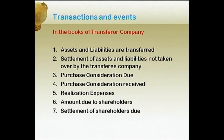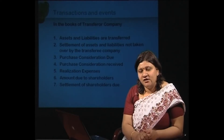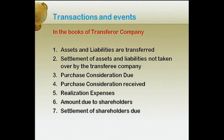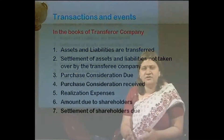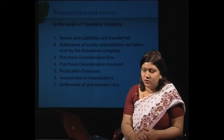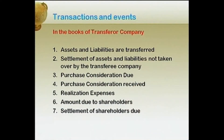First we will analyze the books of the transferor. Whatever may be the form of amalgamation — whether pooling of interest or purchase — there will not be much change in the accounting entries. In the books of the transferor, assets and liabilities are transferred, and it depends which mode of amalgamation is being used. If it is amalgamation in the nature of merger, it will be on the book value.